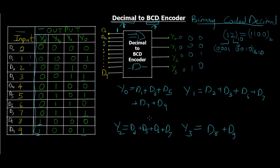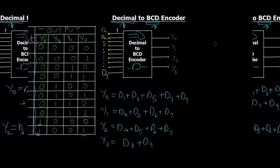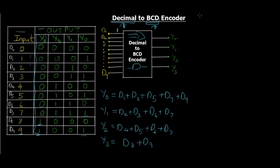Let me just erase this blue part and organize this properly. Now we have this space, let's try to draw the circuit diagram. These are the four different outputs we want—Y0, Y1, Y2, and Y3—and the inputs are from D0 to D9.